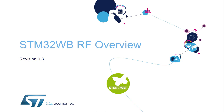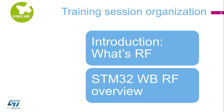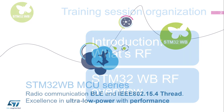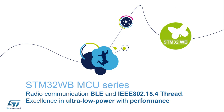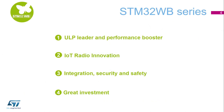Hello and welcome to the STM32WB RF overview session. We will deal with two topics: what is RF, and the STM32WB RF overview. Let's take a closer look at the STM32WB series of Ultra Low Power Bluetooth Low Energy and IEEE 802.15.4 Thread microcontrollers. These are four major points that characterize the STM32WB series.